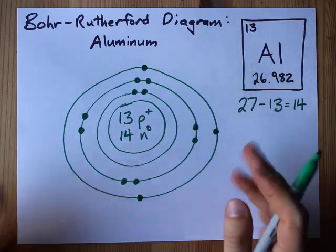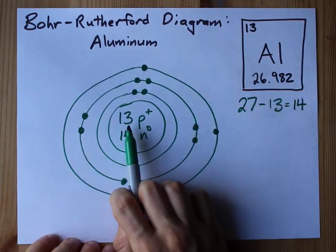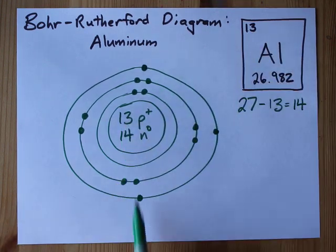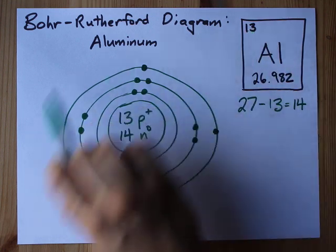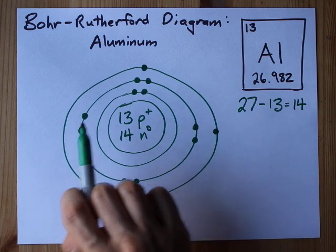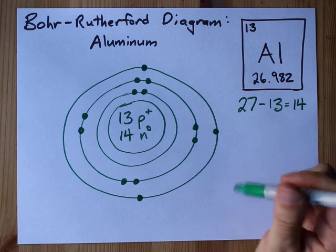2, 8, 3 is my electron arrangement here. But what matters is that I have my protons corresponding to atomic number, neutrons as mass minus atomic number, and the same number of electrons drawn on the proper orbits here, the same number as the atomic number itself.